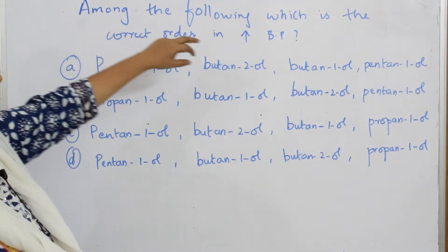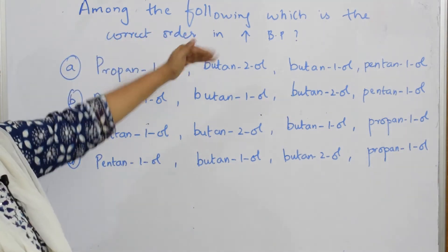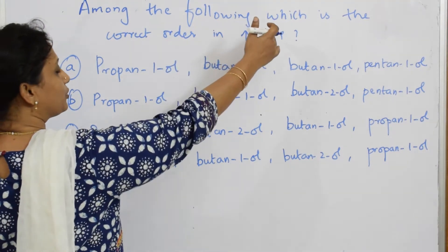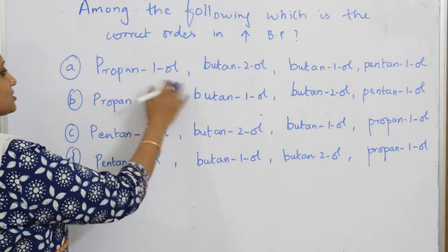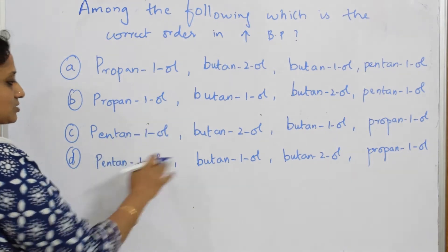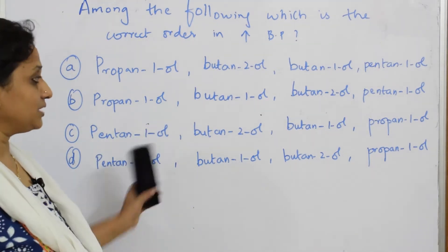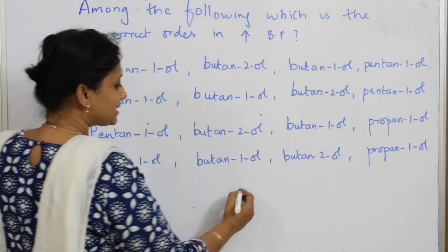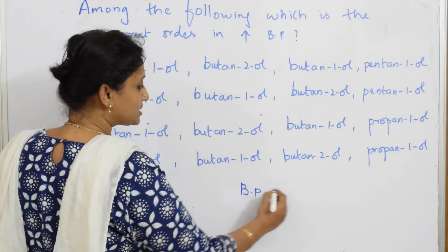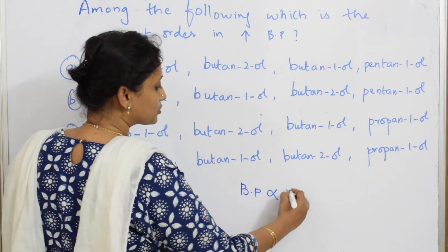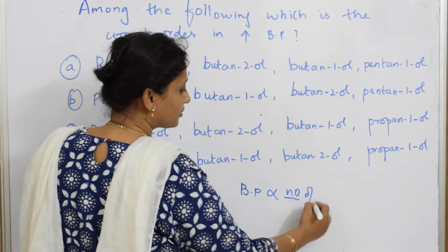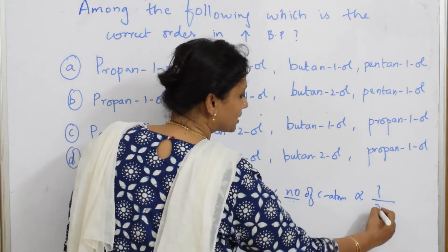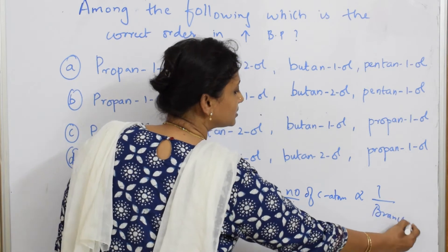Among the following, which is the correct order of increasing boiling point? They have given me four orders to choose from. Remember one simple logic: boiling point is directly proportional to number of carbon atoms and inversely related to branching. If you remember this, all questions are easy.